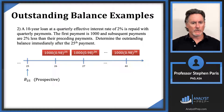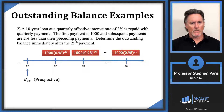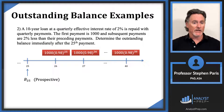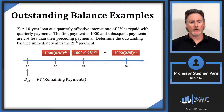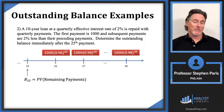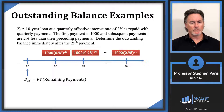Instead, I'll look prospectively. Moving the timeline forward to time 25: since it's a 10-year loan with quarterly payments, there are 40 total payments. After the 25th payment, there are 15 remaining payments. Prospectively, the balance at time 25 is the present value of those remaining future payments. I know exactly how many there are and how much each one is, so this is a geometric annuity calculation from module 2.